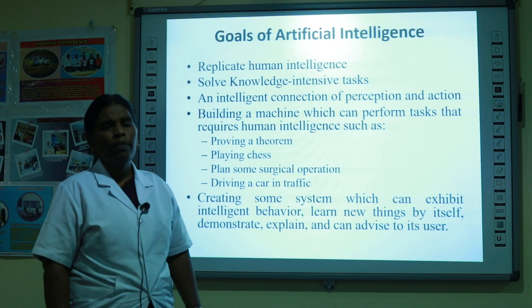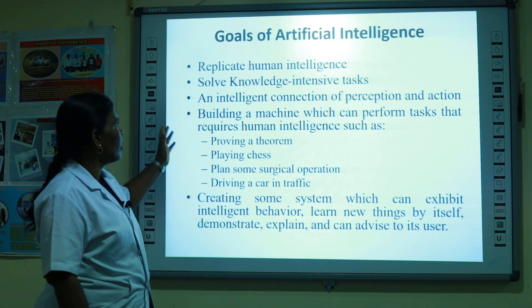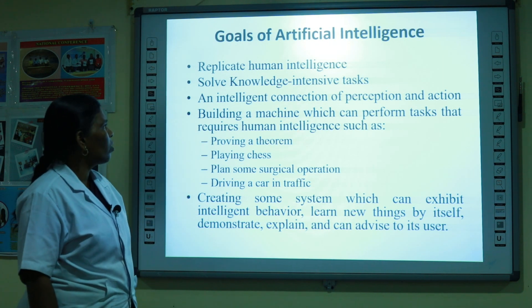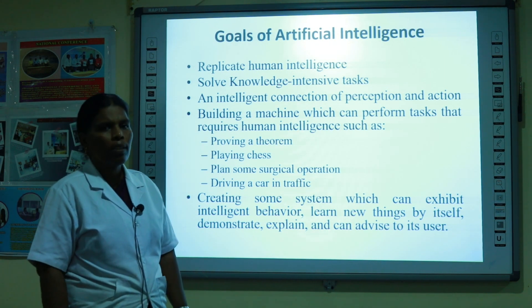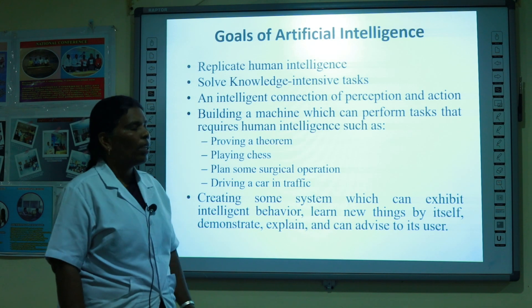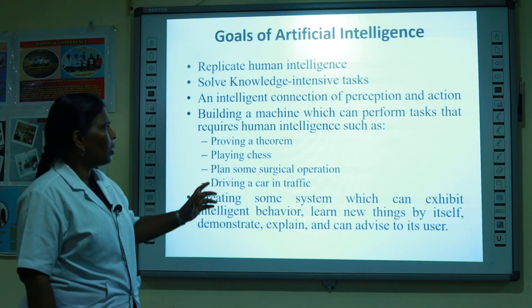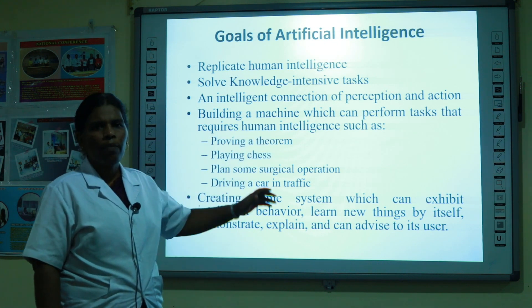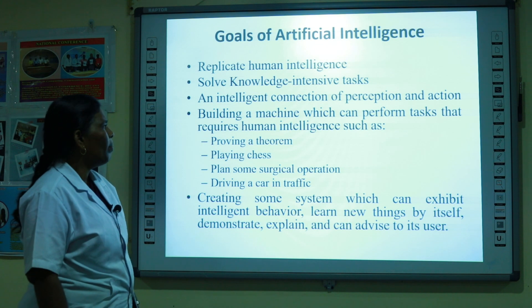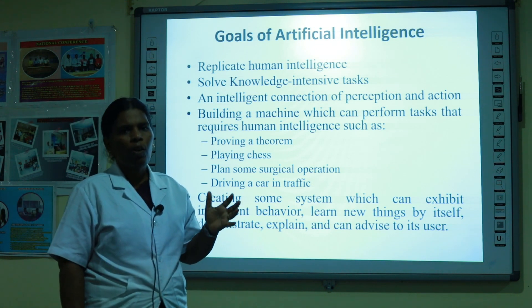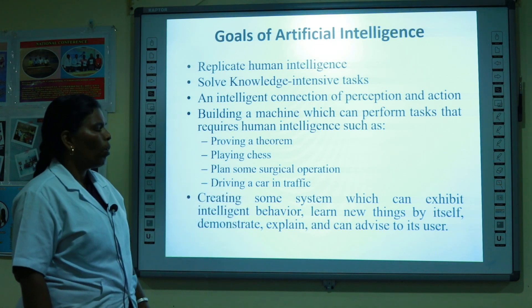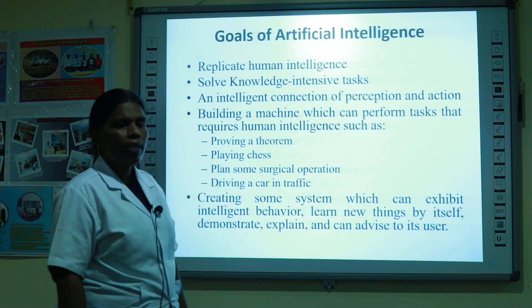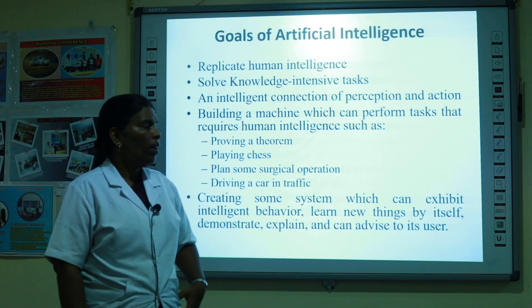What are the goals of Artificial Intelligence? The goals include: to replicate human intelligence and solve knowledge-intensive tasks; intelligent connection, perception, and action — where perception means acquiring properties from the environment through sensors and delivering actions via actuators; and building machines that can perform tasks like playing chess, proving a theorem, planning surgical operations, and driving a car in traffic.